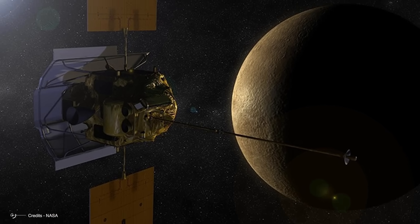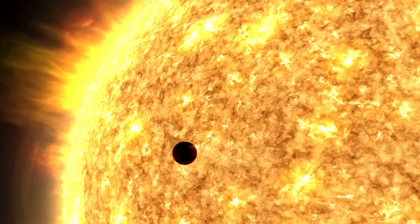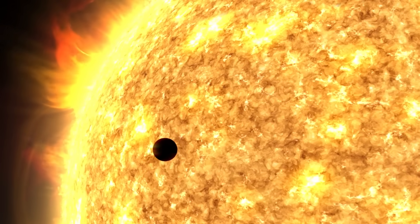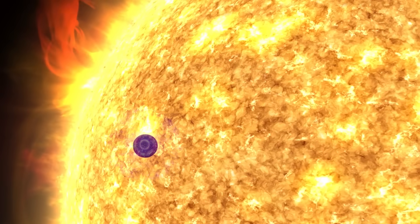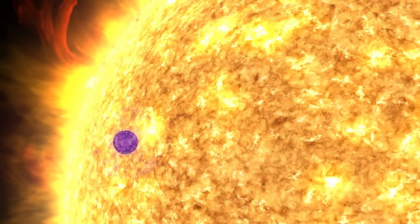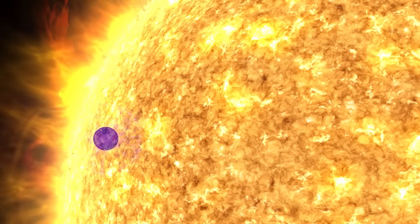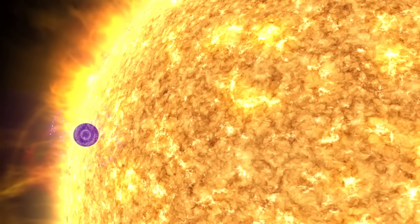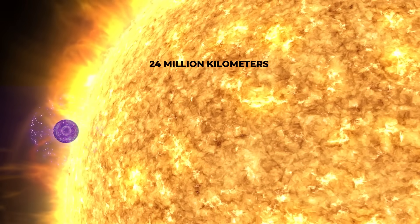But how does it work? The intense solar wind and the Sun's extreme ultraviolet radiation hit Mercury's surface and release sodium atoms. The pressure of sunlight pushes these atoms, spreading them out in a tail that can reach up to 24 million kilometers into space.